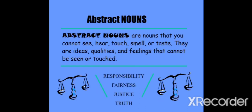What are abstract nouns then? Abstract nouns are nouns that you cannot see, you cannot hear, you can't touch, you can't smell or taste. You can't see them physically. They are ideas, qualities and feelings that cannot be seen or touched. For example, responsibility, fairness, justice, truth, bravery, innocence — all these are abstract nouns.